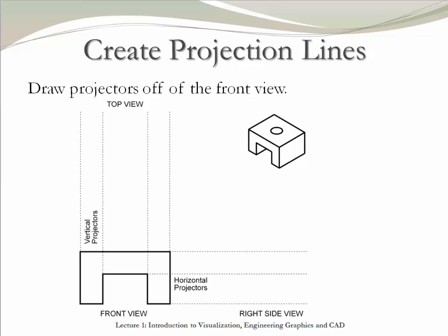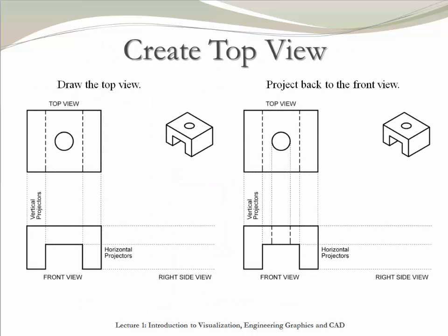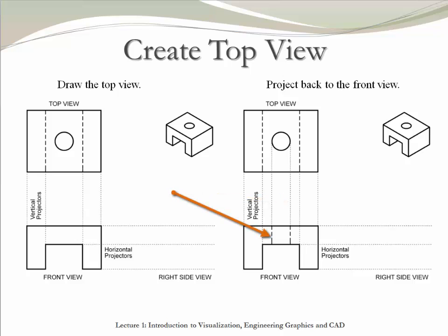Let's now utilize this method to create an orthographic projection of an object. The first step is to create the front view using only visible surfaces, then create horizontal and vertical projection lines. These lines will help determine the size and location of features in other views. Next, create the top view using the projection lines to draw the visible lines. Notice that in this case there are two projection lines that are not visible in the top view, so you need to use hidden lines to represent those features. Once done with the top view, create projection lines for features present in the top view but not in the front view, then add hidden lines into the front view.